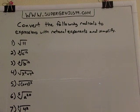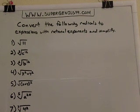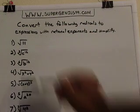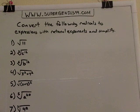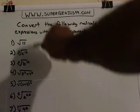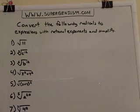To convert a radical to an expression with rational exponents, remember that whatever the index of the radical is, that's these numbers in here, whatever your index is becomes your denominator. And then whatever the power on the number in the radical is, that stays as the numerator.